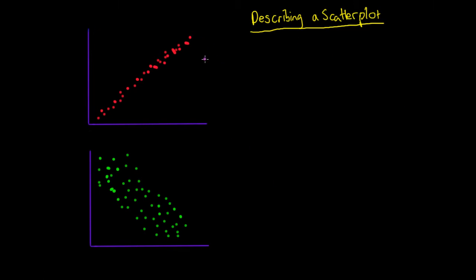So if we remember, when we're drawing a scatterplot, we have our vertical axis, which we always call our y-axis, and we've got our horizontal axis, which we always call our x-axis.